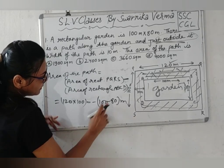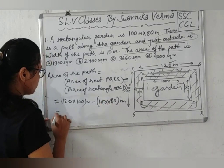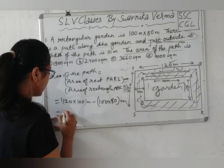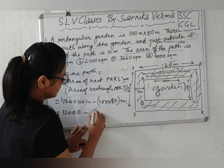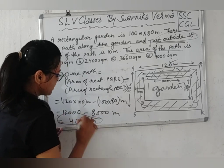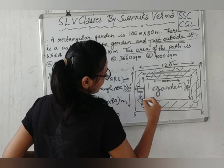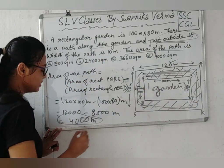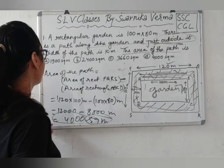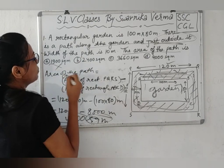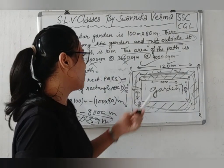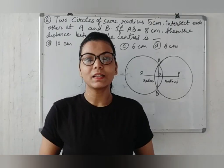Now, what do we need to do? Length into breadth. So 120 and 100 — we do rectangle multiplication: 12,000 minus 8,000 equals 4,000 square meters. So the area of the path is 4,000 square meters. Option D is the right answer.